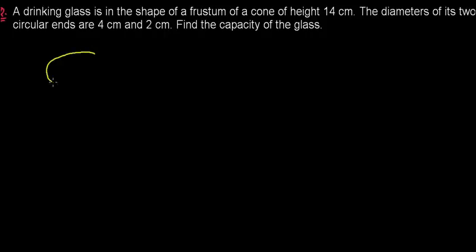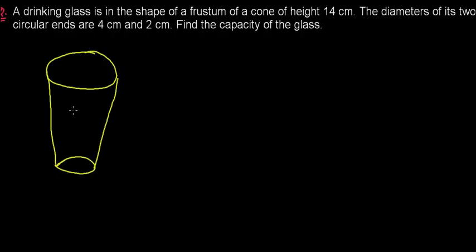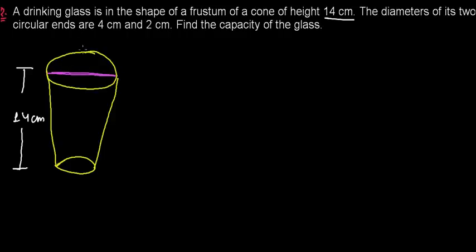Let me draw the glass. This is my drinking glass — an example of a frustum. The upper diameter is 4 cm, so the upper radius is 2 cm. The lower diameter is 2 cm, so the lower radius is 1 cm. The height is 14 cm.